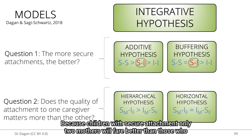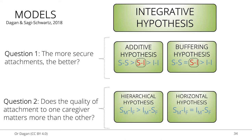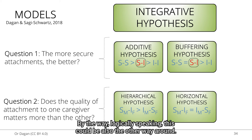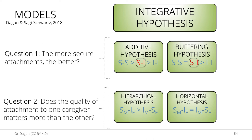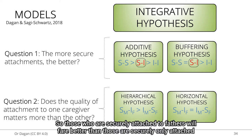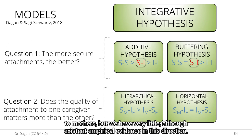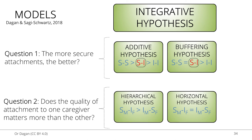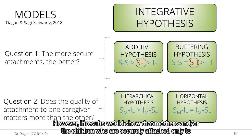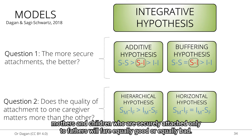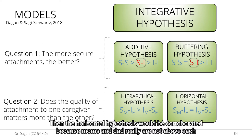Logically speaking, this could also be the other way around — those securely attached only to fathers could fare better than those securely attached only to mothers, but we have very little empirical evidence in this direction. However, if results show that children securely attached only to mothers and children securely attached only to fathers fare equally well or equally poorly, then the horizontal hypothesis would be corroborated — because moms and dads are not above each other in terms of predicting developmental outcomes.